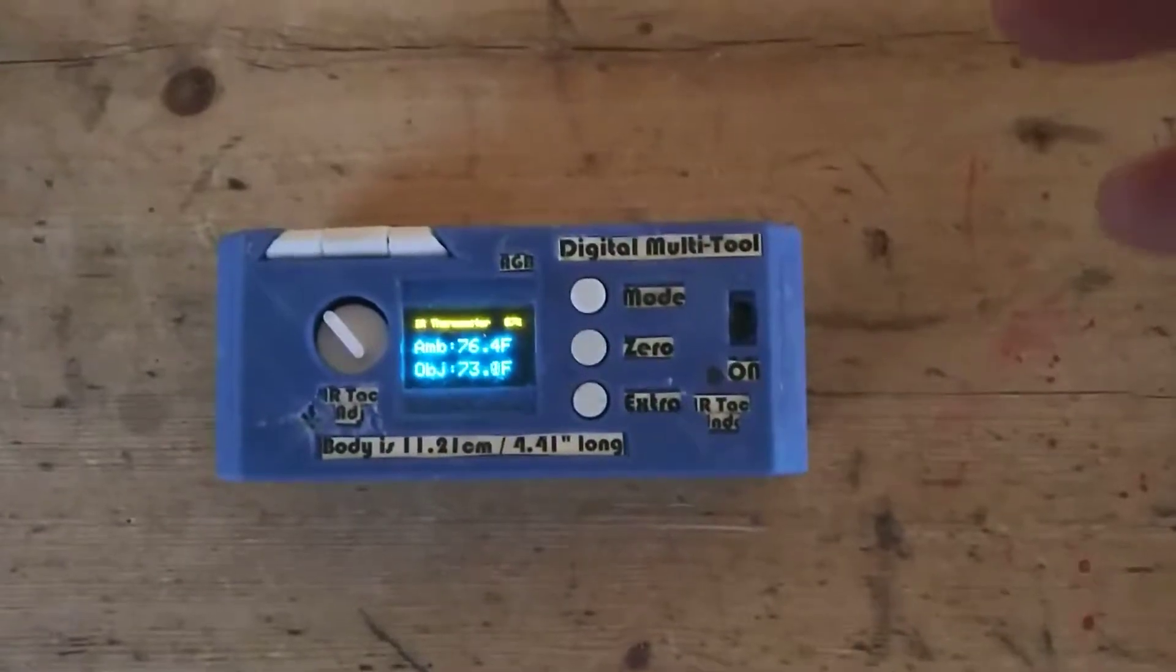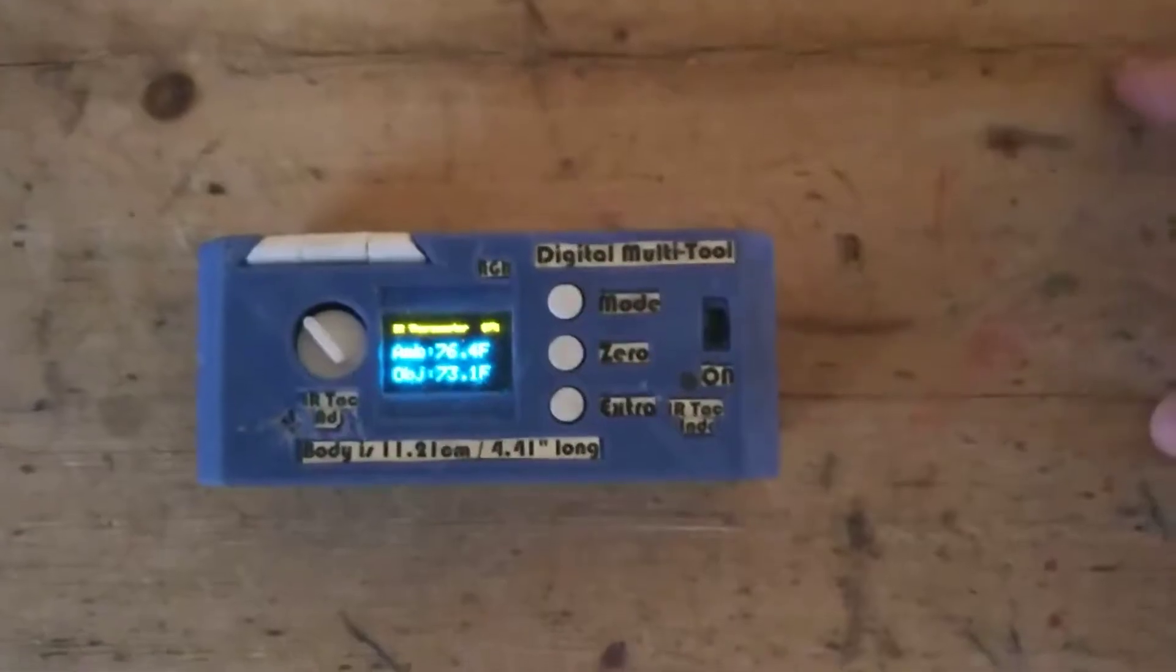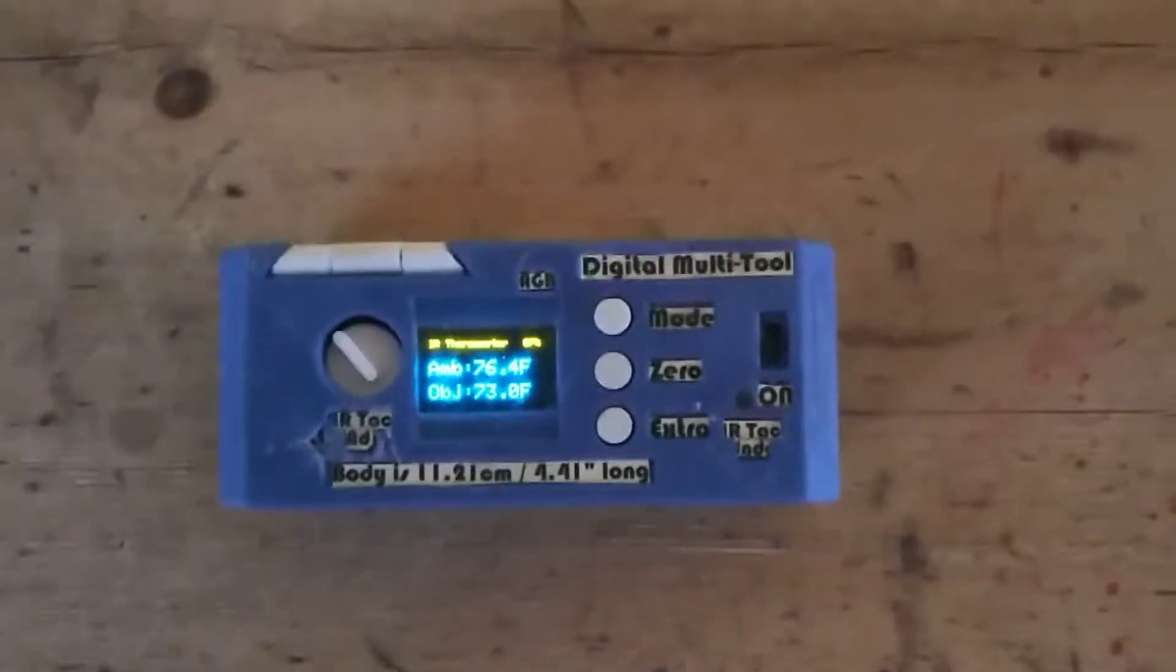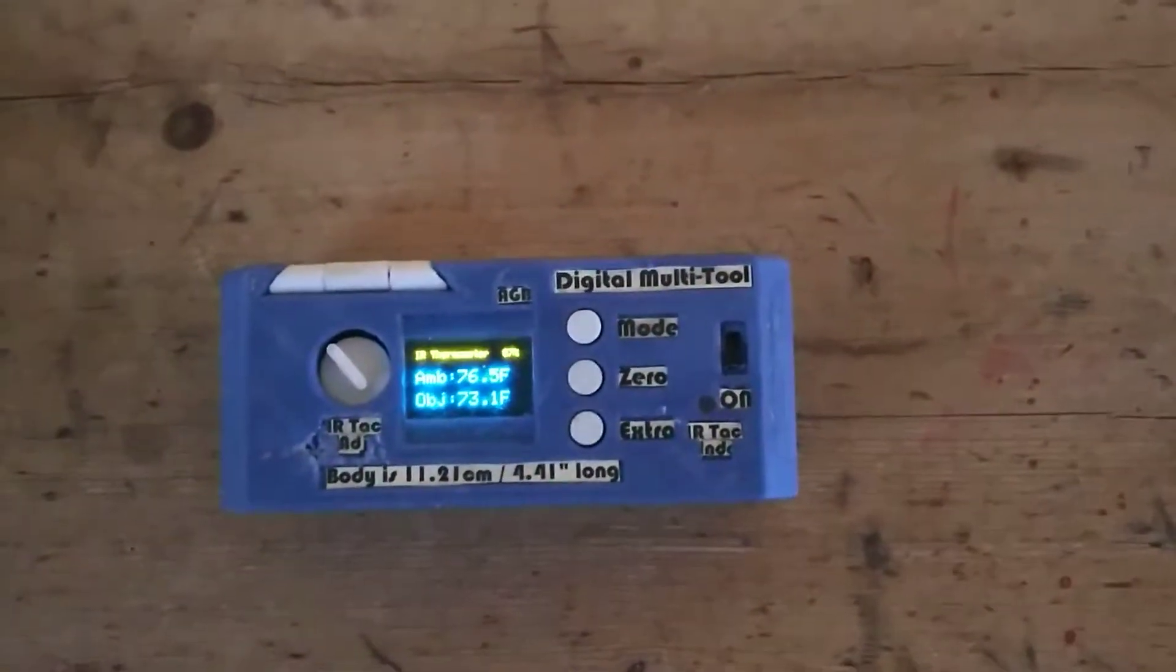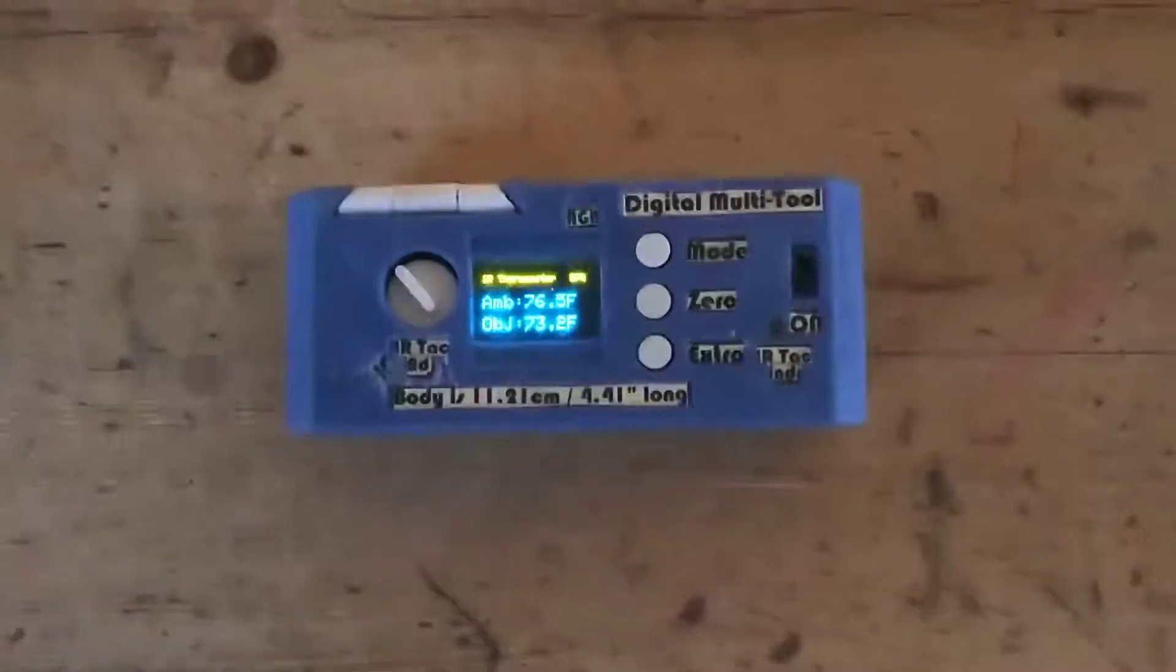So then we have a non-contact thermometer which is on the back side of the unit, so right now it's reading the temperature of the table. And it reads both an object temperature over a wide area and also the temperature of the ambient surroundings which is the sensor body.